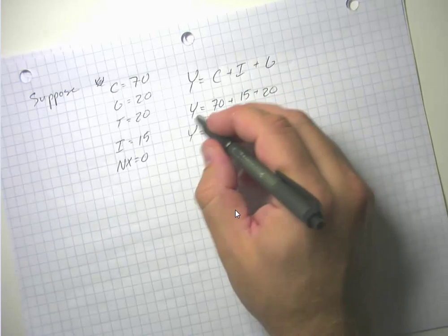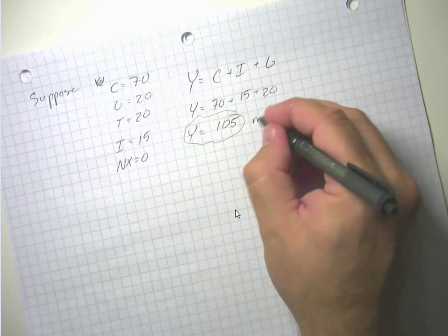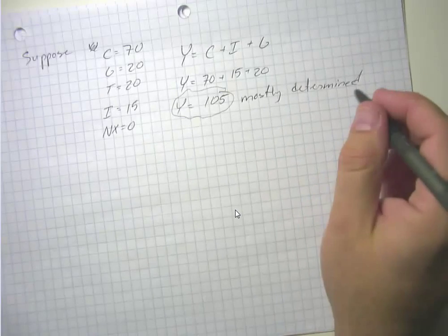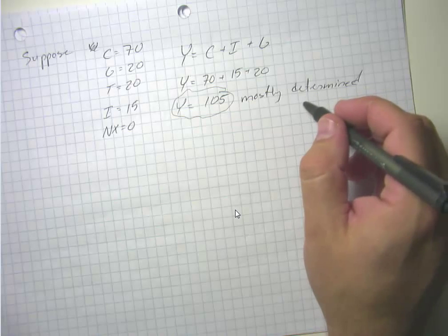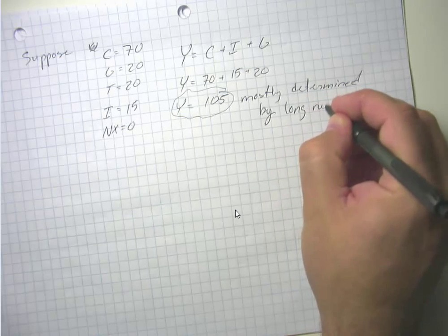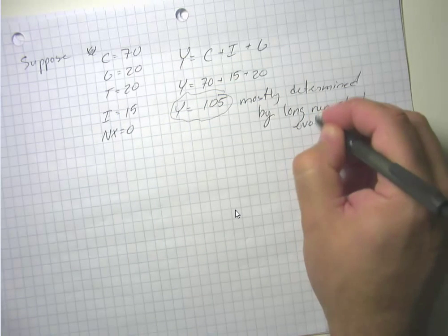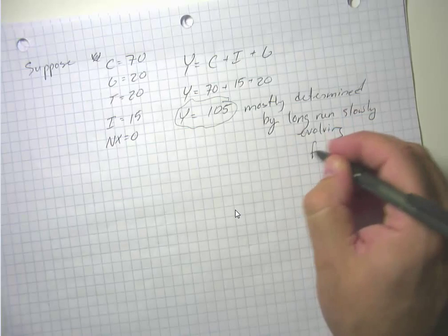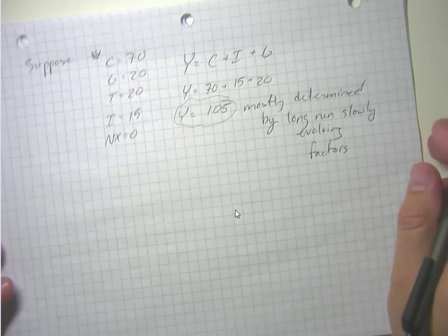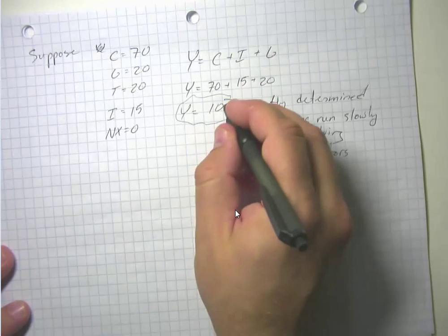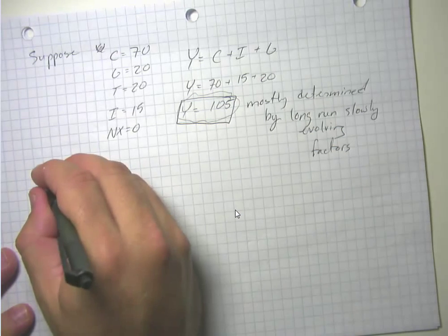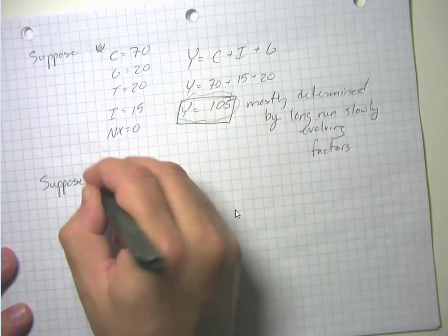In the long run, GDP is mostly determined by things that move slowly — things like the level of technology, capital and human capital per worker, and natural resources per worker. The amount of saving and investment we achieve in a particular year isn't going to move our overall national capital stock by a huge amount. So we're going to assume that total GDP is fixed for now.